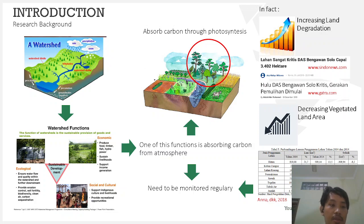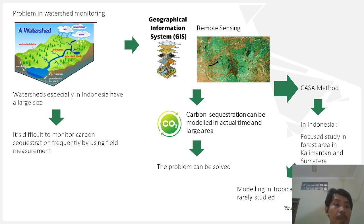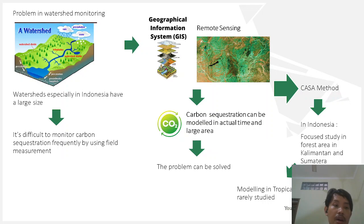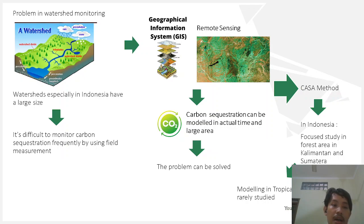Therefore, it is necessary to monitor the dynamic changes in the watershed regularly — not only in land conversion and land degradation, but also the carbon sequestration potential. However, this faces a problem due to the large size of tropical watersheds, especially in Indonesia. It is difficult to monitor carbon sequestration frequently in large areas as it requires big cost and long time. In this research, we try to solve this problem by integrating GIS and remote sensing to monitor carbon sequestration in the upper Bengawan Solo watershed. Using remote sensing and GIS, carbon sequestration can be modeled in large watershed areas in near real-time with low cost.